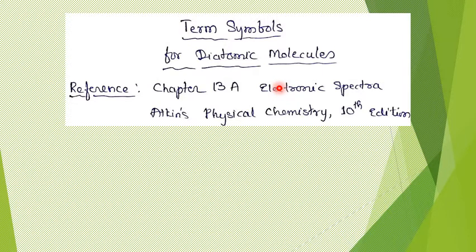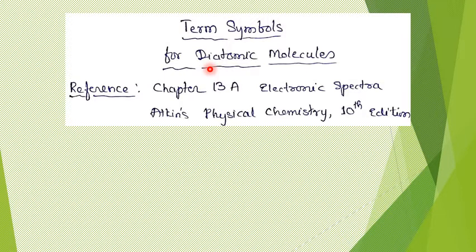So how are term symbols for a diatomic molecule written? Just like atomic term symbols — triplet P, doublet D and so on — it is possible to write molecular term symbols for diatomic molecules, or in other words for linear molecules. Whether it is homonuclear or heteronuclear diatomic doesn't matter. You can write it for both, and that is what we will learn.